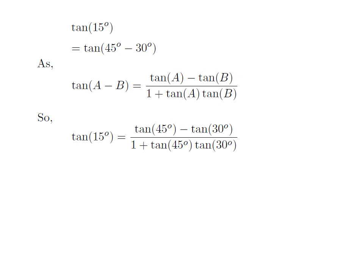So, tan of 15 degrees, which is equal to tan of 45 degrees minus 30 degrees, is equal to tan of 45 degrees minus tan of 30 degrees, divided by 1 plus tan of 45 degrees into tan of 30 degrees.